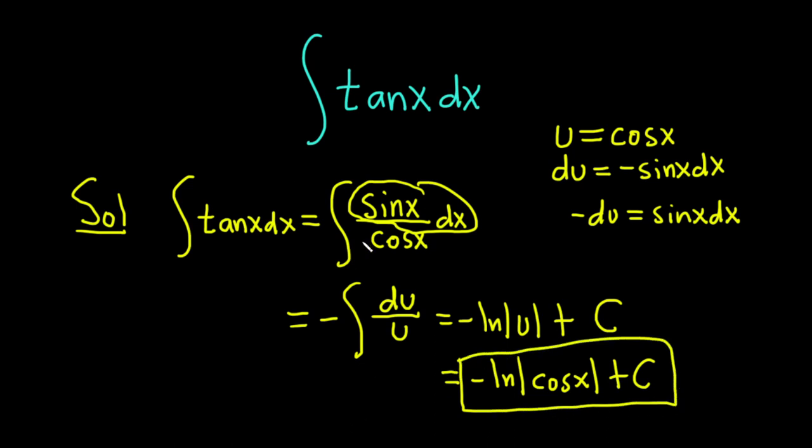So really not that difficult once you know how to do it. And if you kind of think about how do you do it, you write it as sine over cosine. You can kind of memorize the steps, or at least you know what the steps are like. And so that can lead you to memorizing the answer.